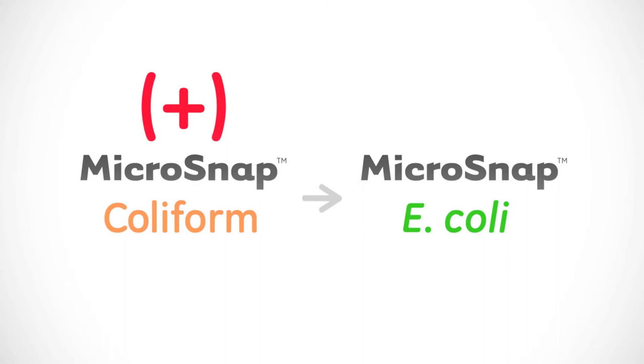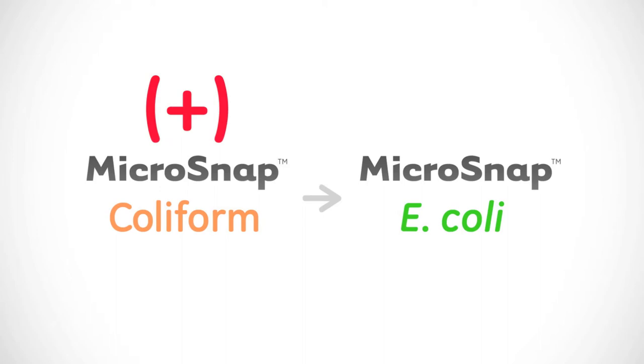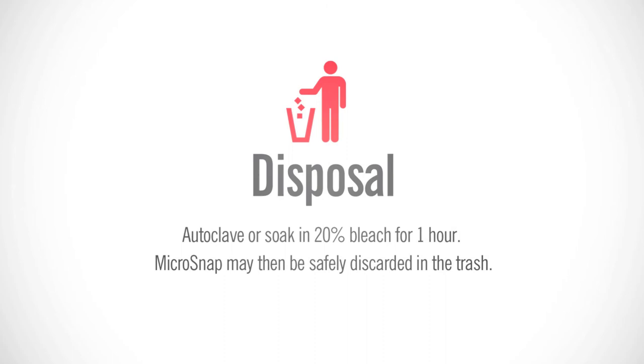To properly dispose of MicroSnap, disinfect the devices by autoclaving or soaking in 20% bleach for one hour. MicroSnap may then be safely discarded in the trash. For more information about MicroSnap or any other Hygiena product, contact us with the information on the screen.